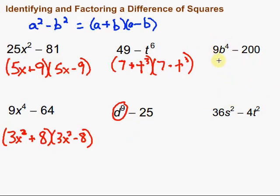How about this one? First term, we've got 9b to the 4th. What squared would get us that? Well, that would be 3b squared. So we're good there. Then, 200. Is that a perfect square? Is there something multiplied by itself that would get us 200? Hmm. No, there's not. So we can't factor that one as a difference of squares because of that 200. 200 is not a perfect square.